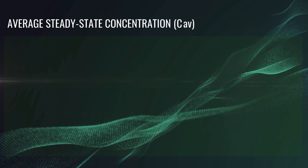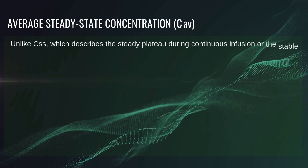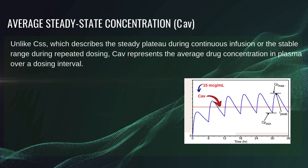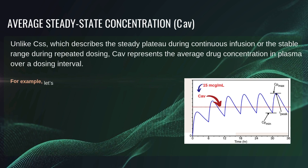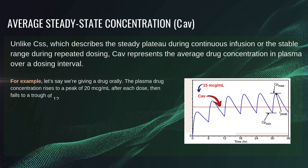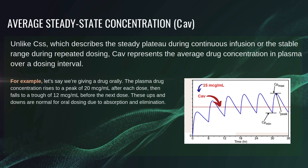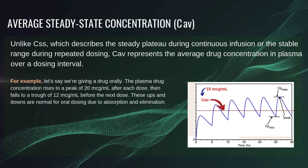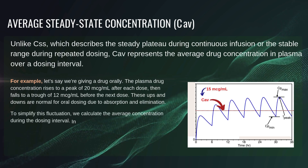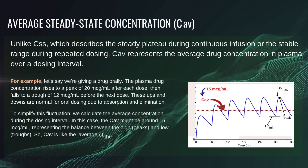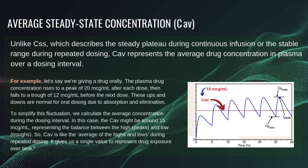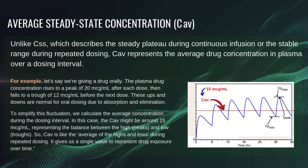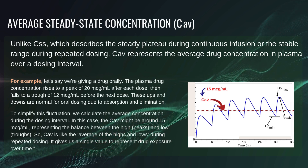Now let's look at average steady-state concentration, CAV. Unlike CSS, which describes the steady plateau during continuous infusion or the stable range during repeated dosing, CAV represents the average drug concentration in plasma over a dosing interval. For example, if we give a drug orally, the plasma drug concentration rises to a peak of 20 micrograms per ml after each dose, then falls to a trough of 12 micrograms per ml before the next dose. The CAV might be around 15 micrograms per ml, representing the balance between peaks and troughs — giving us a single value to represent drug exposure over time.